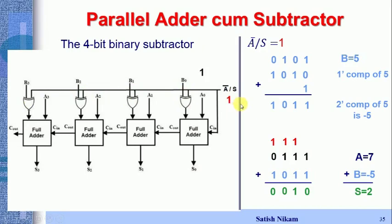With A=7 (0111) and B=5 (0101) applied: since /S=1 is at one input of each XOR gate, B bits are complemented — B0=1 becomes 0, B1=0 becomes 1, B2=1 becomes 0, B3=0 becomes 1. Since /S is connected to C-in, C-in = 1, effectively adding 1 to the one's complement.